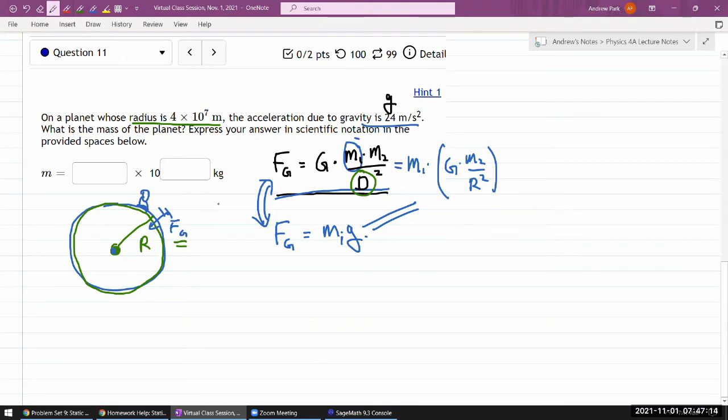Let me solve this for the mass m2 because that's what we need. G m2 over r squared is equal to g, so m2 is equal to small g times r squared divided by big G.